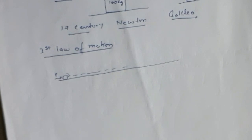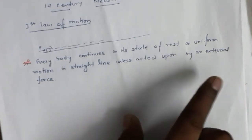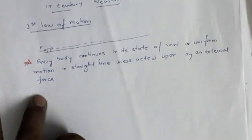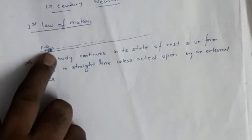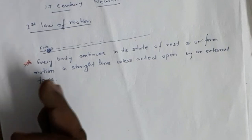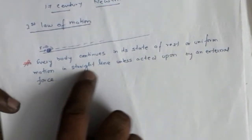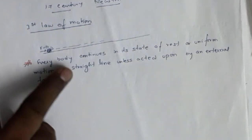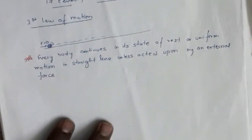The statement of the first law is: every body continues in its state of rest or uniform motion in a straight line unless acted upon by an external force. If no force acts, the body stays at rest forever. To move it, an external force is needed. Similarly, to change the direction of a body moving in a straight line, a force must be applied.